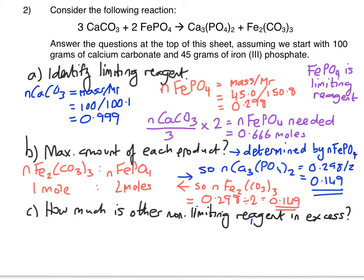So the final job to do is to work out how much our calcium carbonate is in excess. So the first thing we have to do is work out how much calcium carbonate was actually used up by our limiting amount of iron phosphate. The mole ratio of iron phosphate to calcium carbonate is 2 to 1. So what you've got to do is scale it up, so you take your 0.298 moles of iron phosphate that we have got and you multiply it by 1.5, and that gives you 0.447 moles of calcium carbonate that's actually used up.